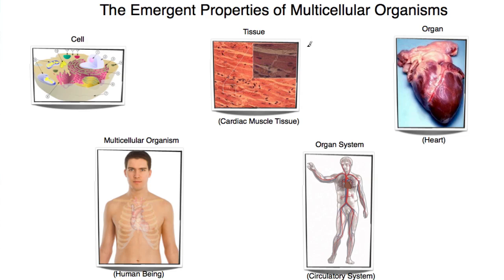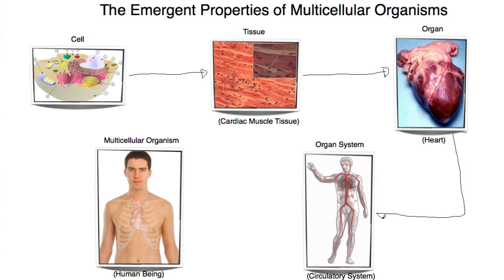Let's take a look at the emergent properties of multicellular organisms. We know that all multicellular organisms are made up of cells, and many cells working together form tissues. I've taken the example of cardiac muscle tissue here. Many tissues working together will form an organ, for example the heart, and many organs working together will form an organ system, and I've taken the circulatory system.